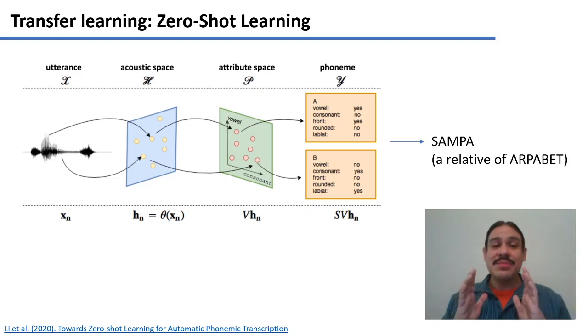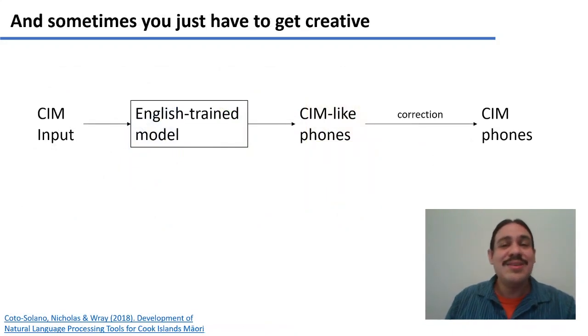And so what you could do is remap that output onto the correct transcriptions categories for Cook Islands Maori. And so you have something that hears based on its English data, but transcribes Cook Islands Maori, because it finds similarities between the output and Cook Islands Maori.